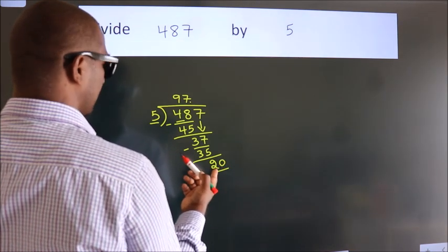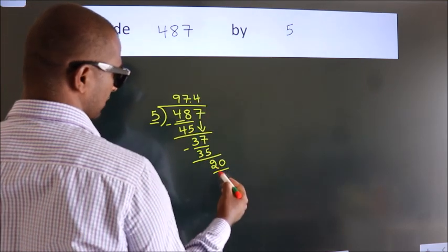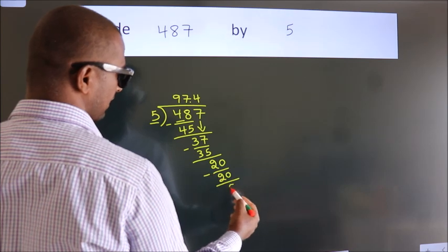When do we get 20 in the 5 table? 5 fours, 20. Now we subtract and get 0.